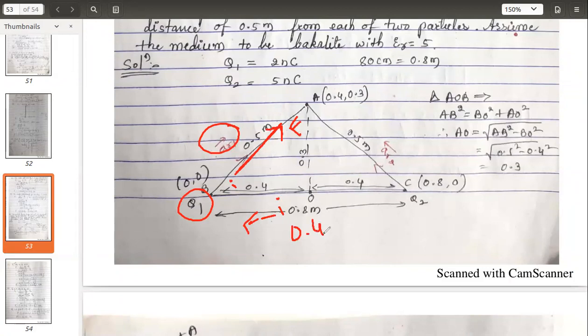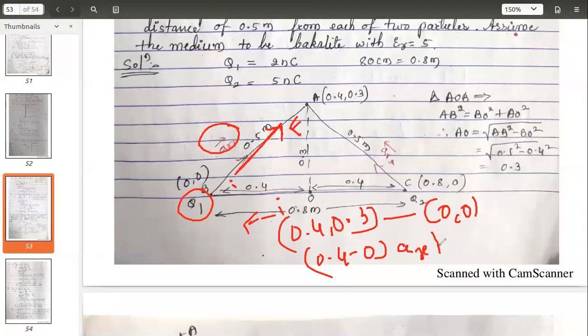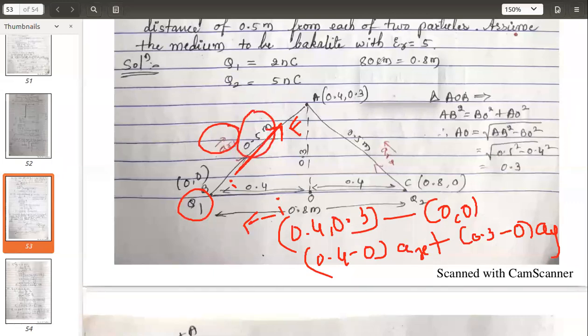Take this as the initial point, this is the final point. To find it, you should go for f minus i. So f is (0.4, 0.3) minus initial, which is at the origin. Subtract: 0.4 minus 0 in x direction âₓ, plus 0.3 minus 0 in y direction. Subtract them, you will get 0.4âₓ plus 0.3ây.